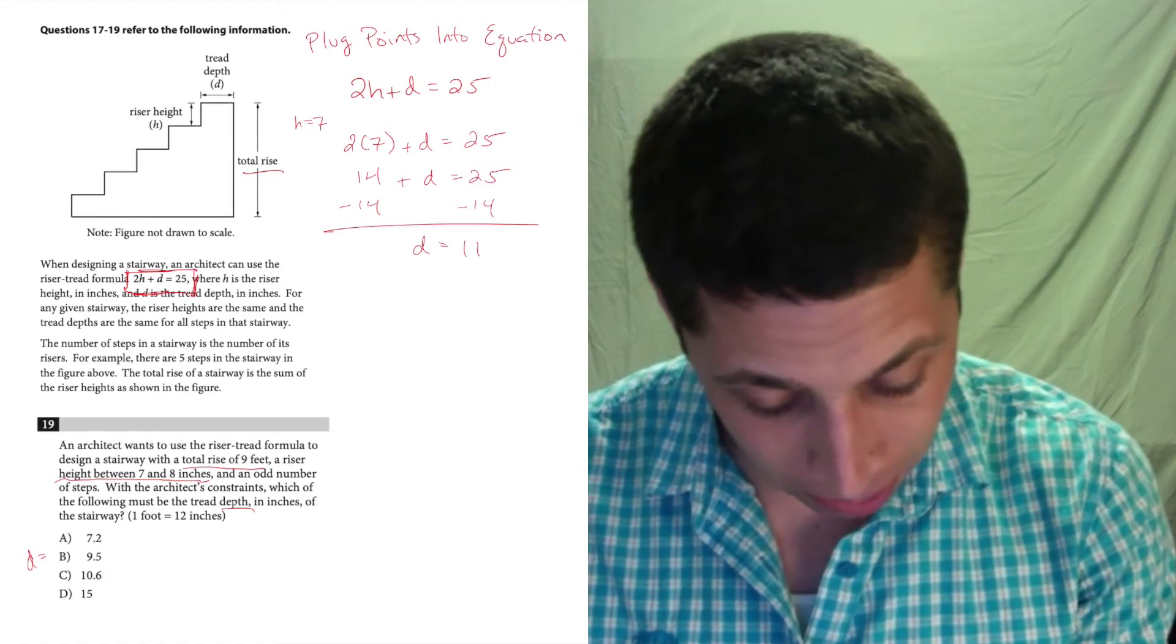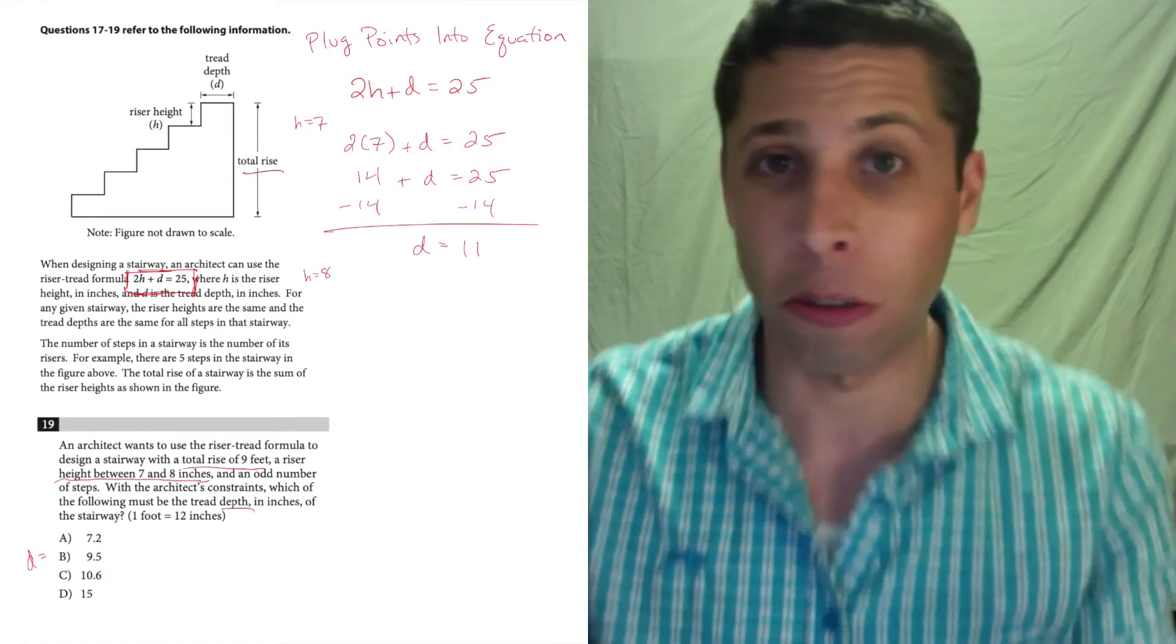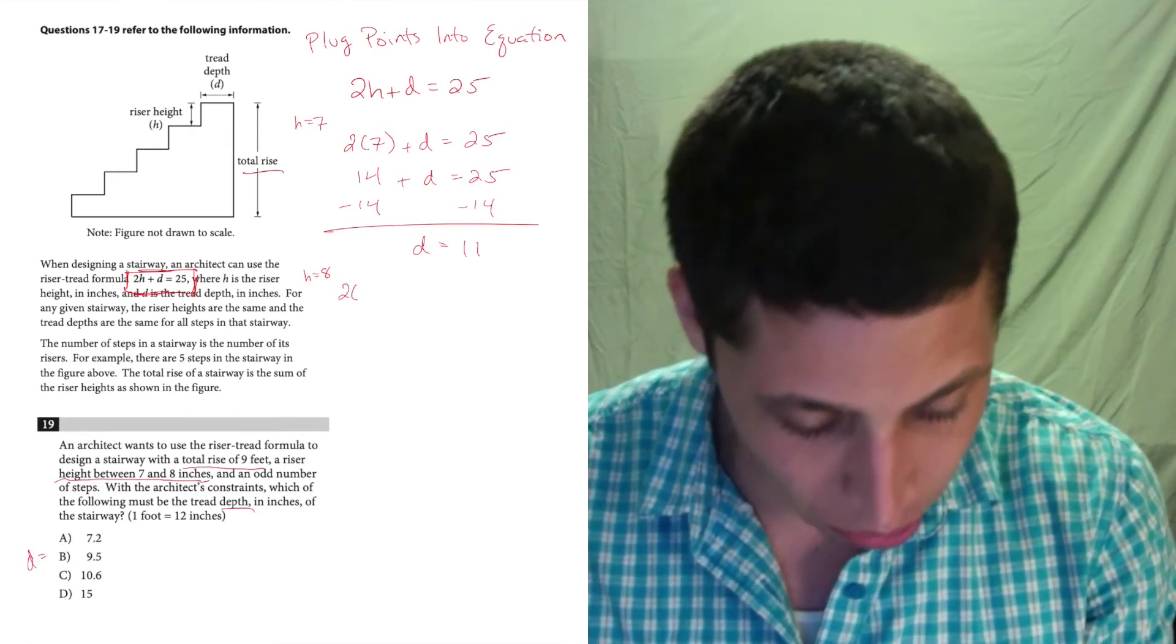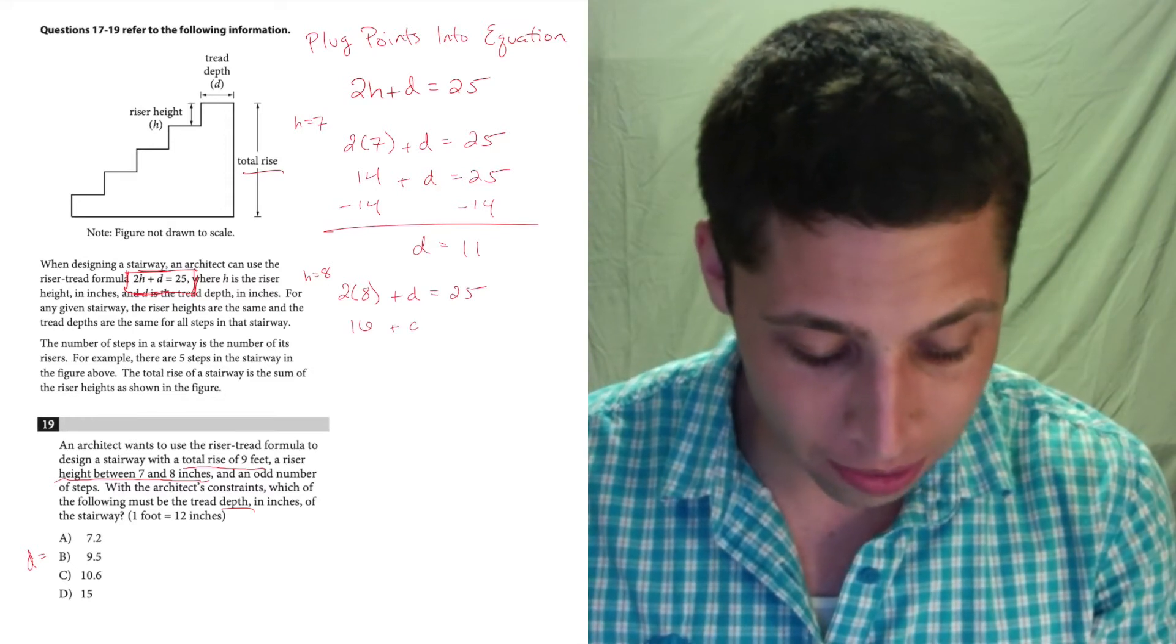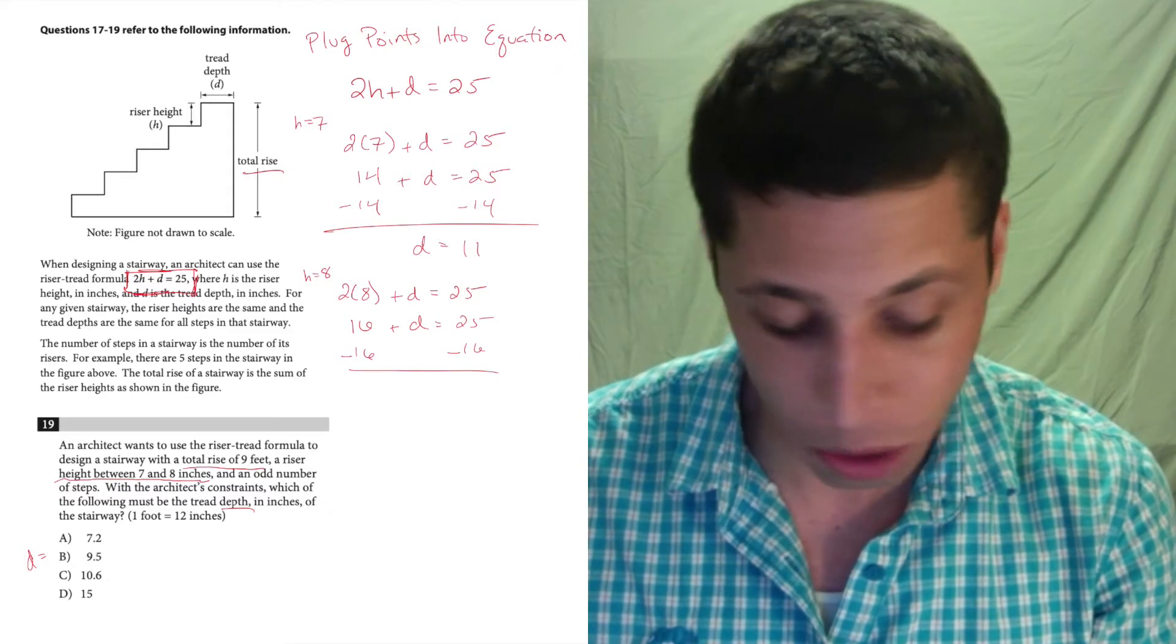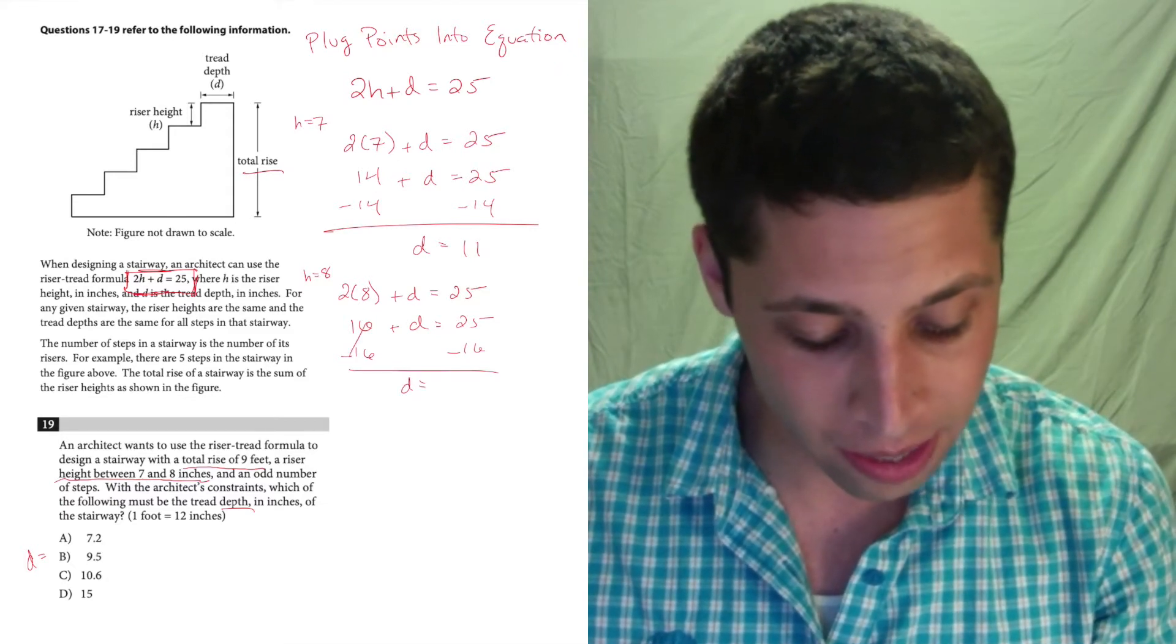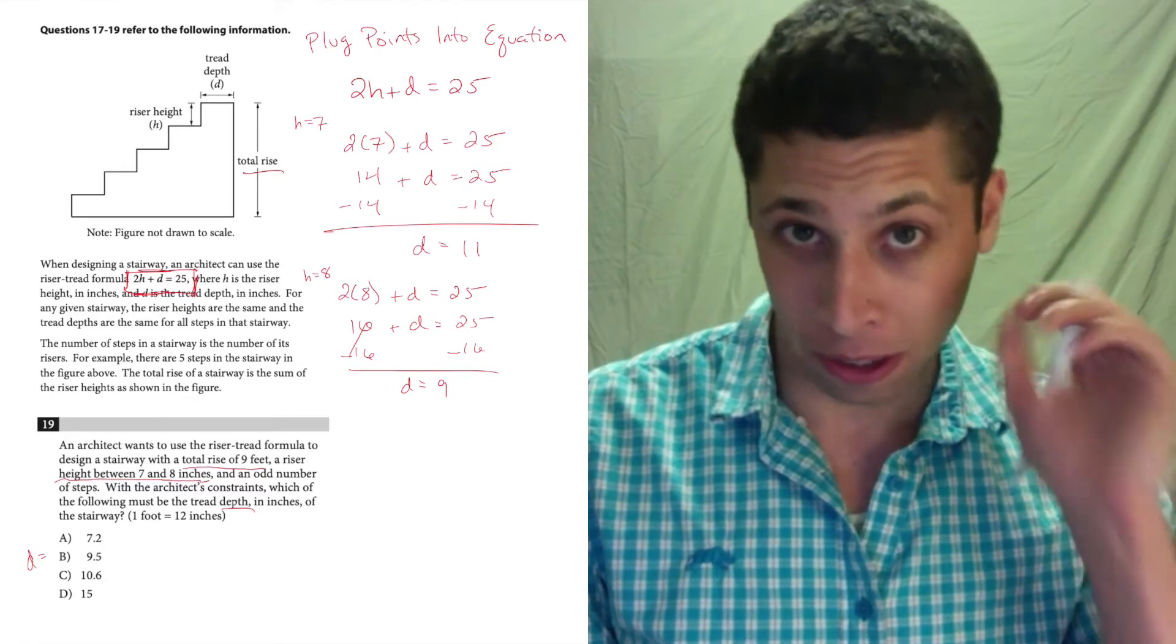Let's see what happens when we put h as 8. We tried 7, let's try 8. That's 2 times 8 plus d is equal to 25. So that's 16 plus d is equal to 25. Subtract 16, and d is equal to 9. I think I have learned something here.